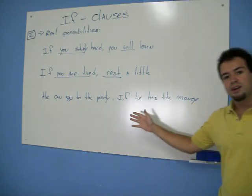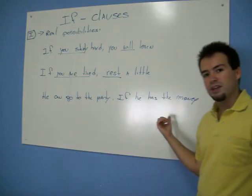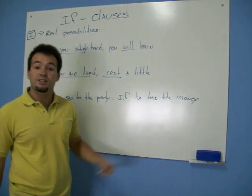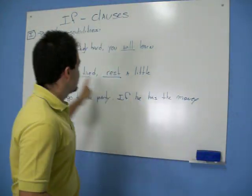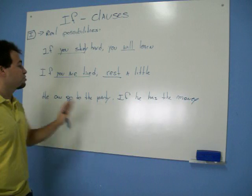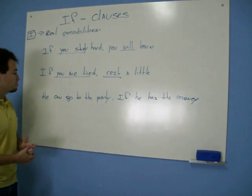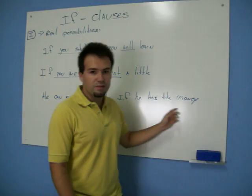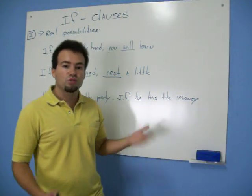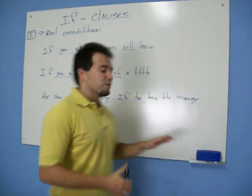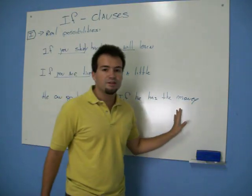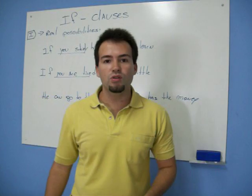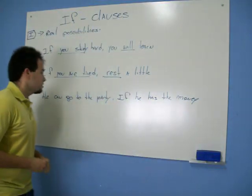You can go to the party if you have the money. Is it possible to invert the sentences? Yes, it is. You don't need to keep 'if' only at the start — you can put it on the opposite side as well. So: 'He can go to the party if he has the money.' Also a real possibility, because my condition to go to the party is having the money. If I don't have the money, I cannot go to the party.